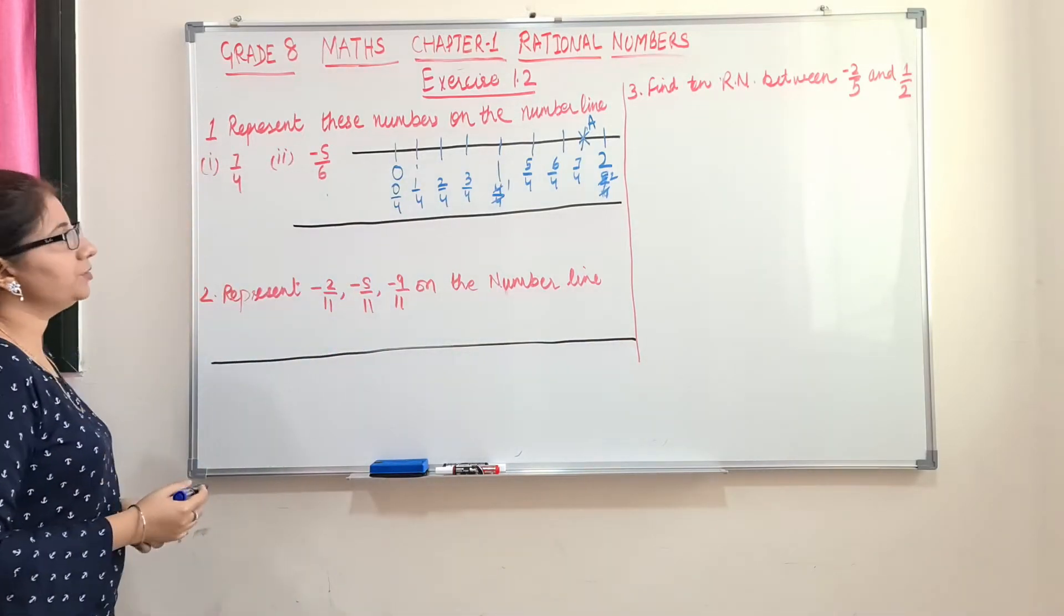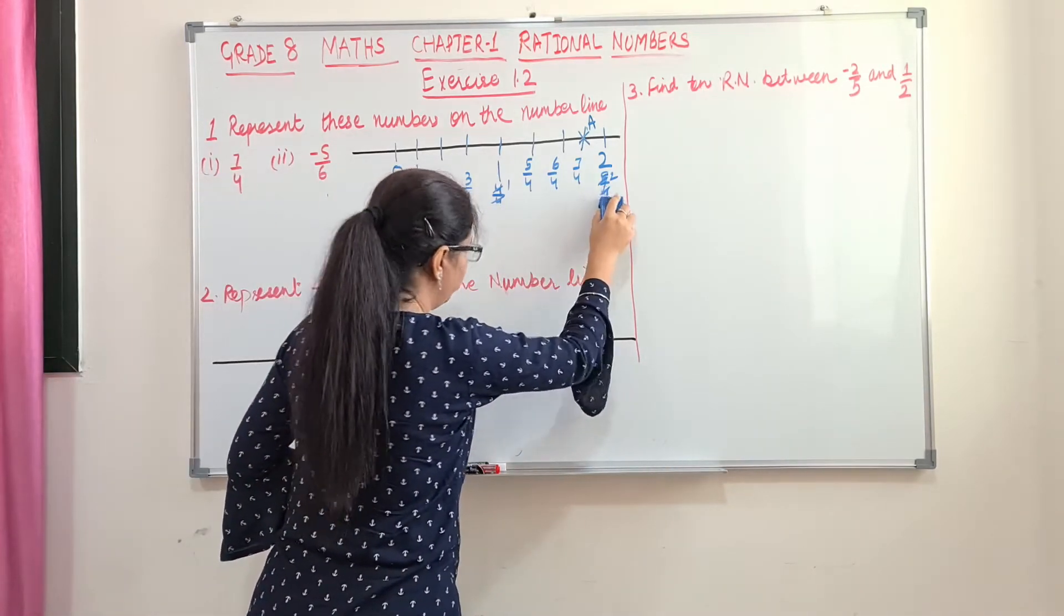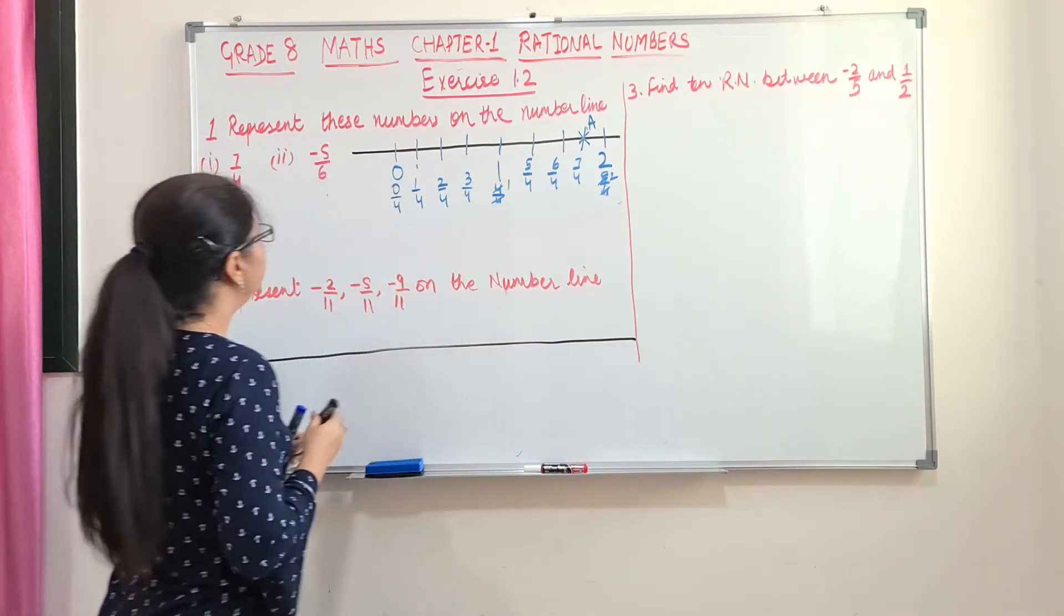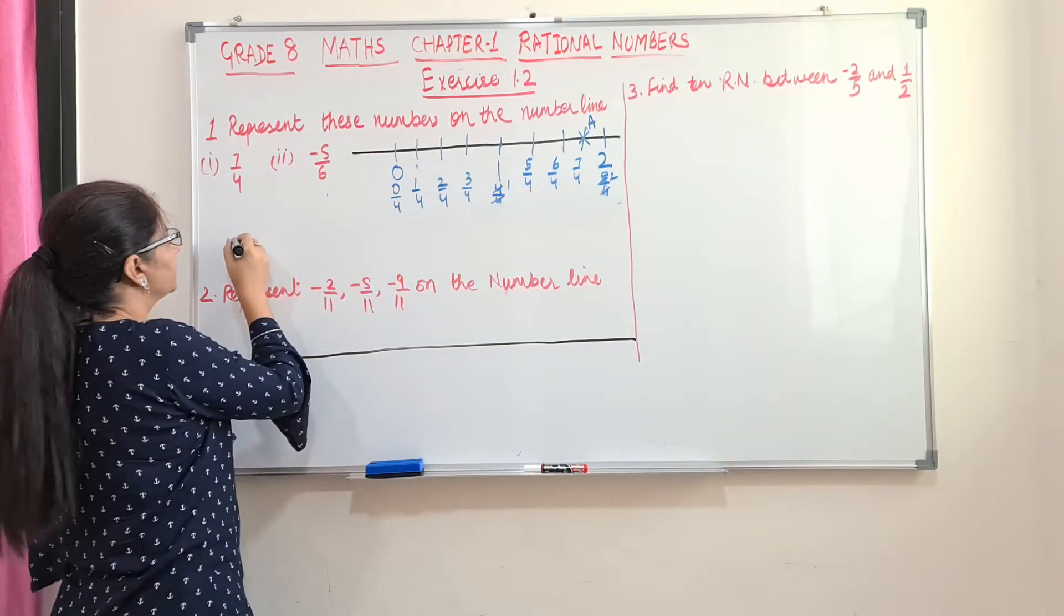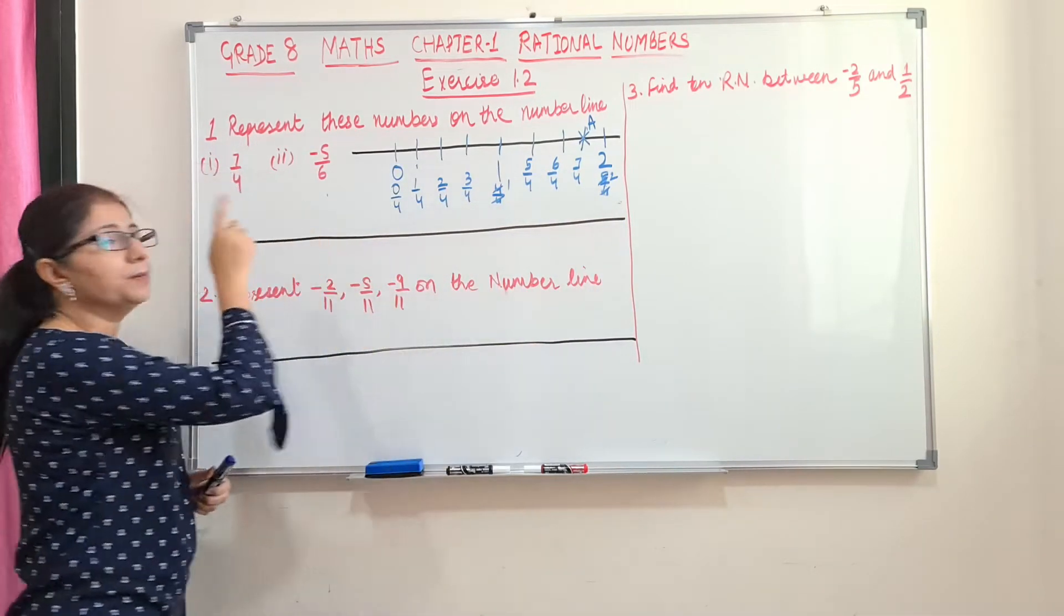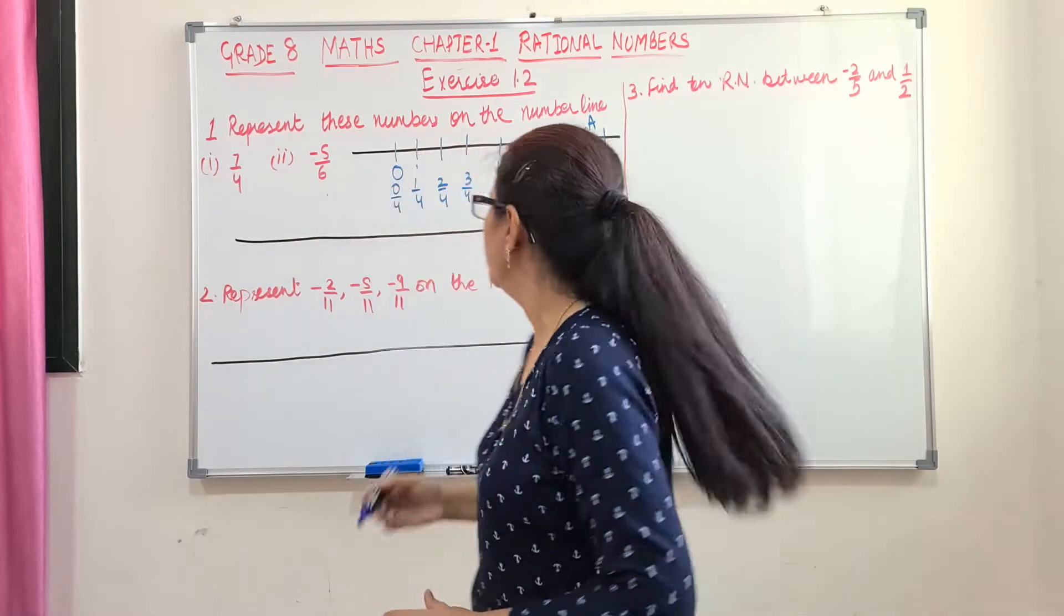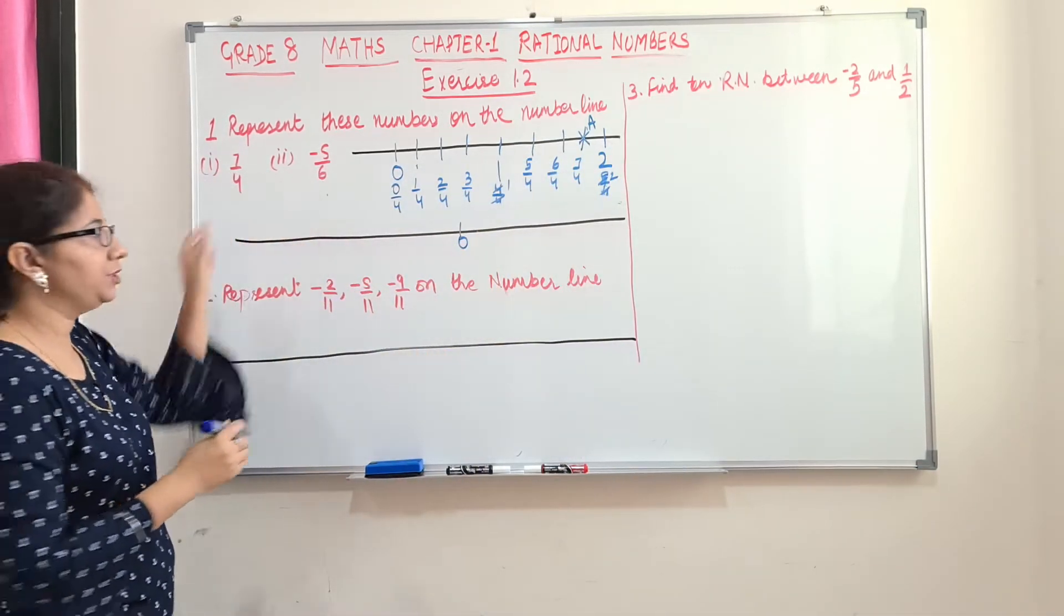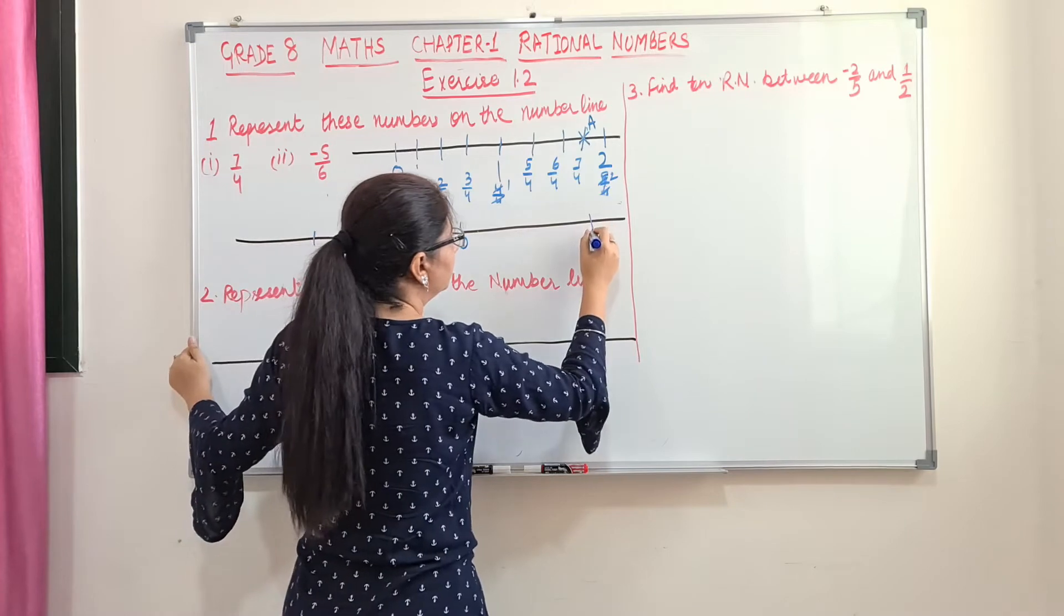Next is minus 5 by 6. So since my line just merged with this, I will make it separate line. The question is minus 5 by 6. So how many parts we will divide it? 6 because denominator is 6. So this is minus 5 by 6. That means we should move towards left of 0. So here I will mark this as 0. So how many divisions? 6 divisions. So first I will mark here 1. So here it is 1.